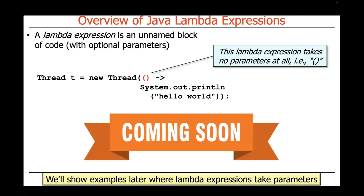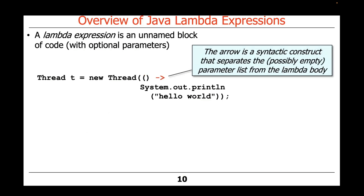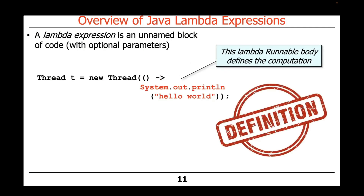We'll talk later about other examples where Lambda Expressions take parameters. This one is simple because the Runnable's run method doesn't take any parameters. There's an arrow, which is a syntactic construct that separates the possibly empty parameter list from the so-called body of the Lambda. The body of the Lambda defines the computation — this is a Lambda Runnable body that simply prints hello world to the standard output.